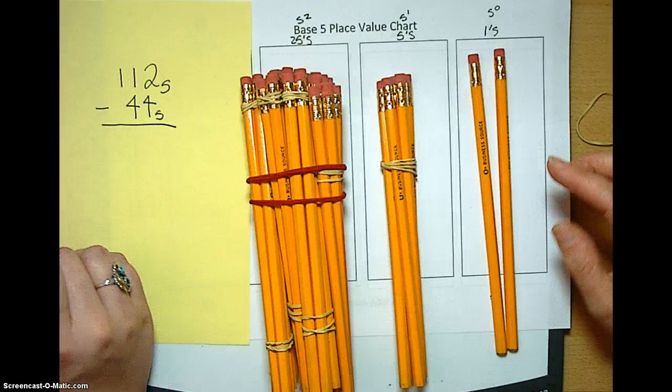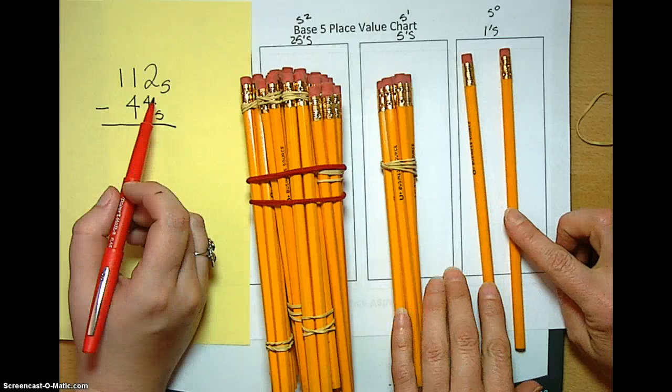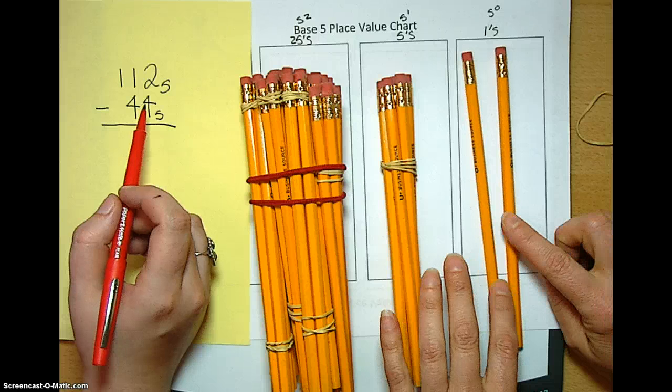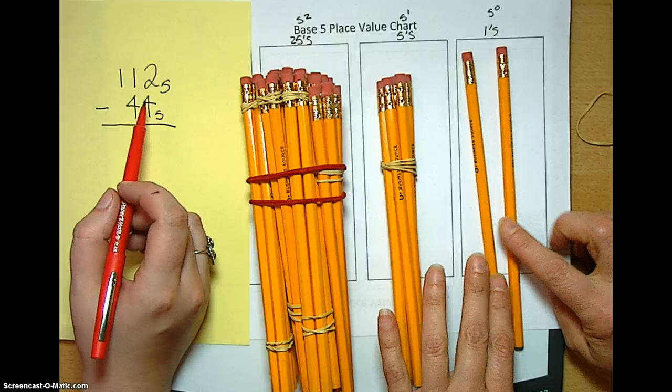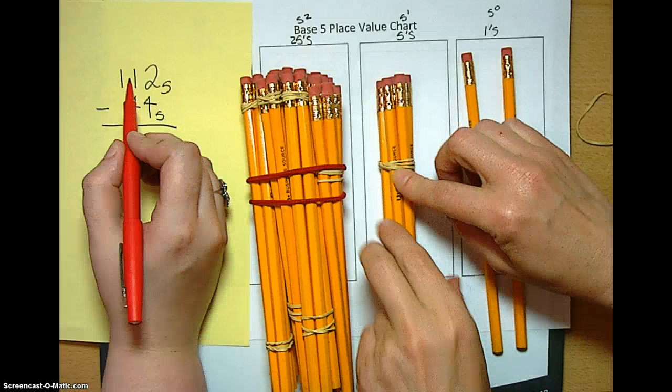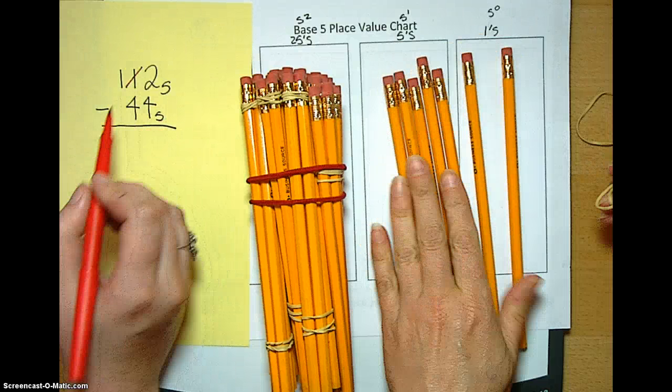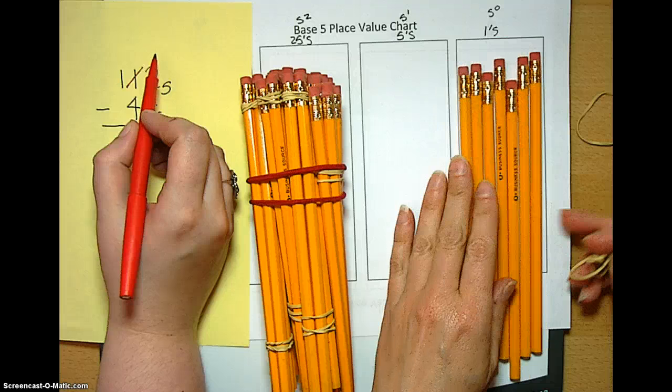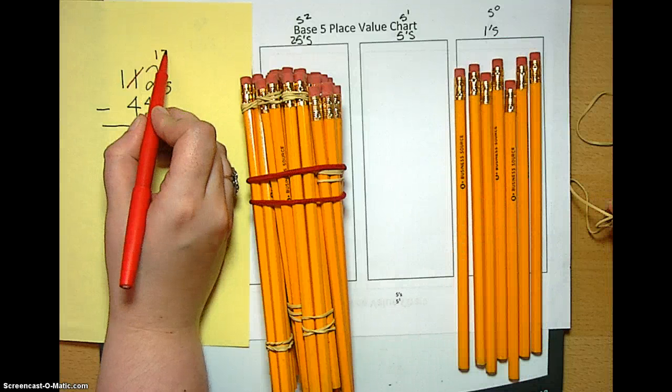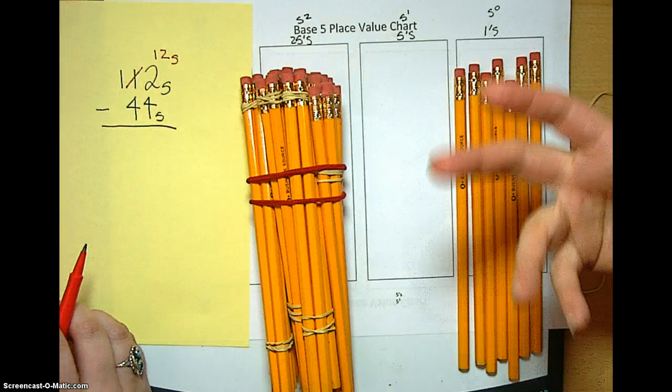It says we need to take 4 away from 2. Can you do that? I don't think so. So what do you think we can do to make the take 4 away from this? Can we unbundle the 5s? Yes, let's unbundle this group of 5. And then that leaves us with a whole bunch of pencils over here, so it looks like I can take away 4. Does it carry over here to 1, 2 base 5 over here? Yeah.